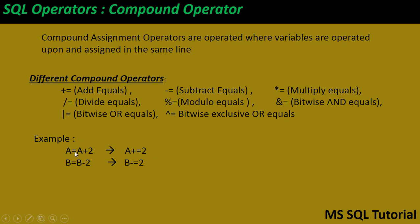Similarly, 'b -= 2' is the same as 'b = b - 2'. We also have multiply-equals (*=), which multiplies by an amount and sets the original value to the result, and divide-equals (/=), which divides by an amount and sets the original value to the result. The same pattern applies for modulo-equals (%=).